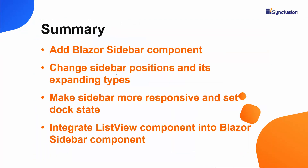Let's recap what we have covered in this video. We saw how to create a Blazor WebAssembly app using Visual Studio 2019 and add a Syncfusion Blazor sidebar component to it. Also, we discussed how to change the sidebar position and its expanding types. We also saw how to make the sidebar component more responsive and how to set the dock state in the sidebar. Finally, we saw how to open and close the sidebar component manually, as well as how to integrate the ListView component into the sidebar component. If you would like to see the working code of this example, you can download it from the GitHub link in the description below. I have also provided a link where you can see if you qualify for a free community license to use all our Blazor products. If you find this video useful, don't forget to click the like button and subscribe to our channel to watch more videos like this.